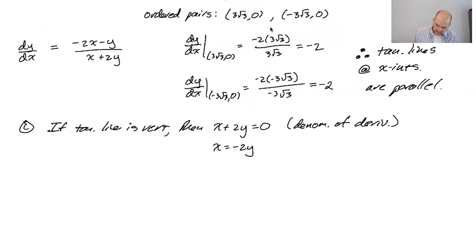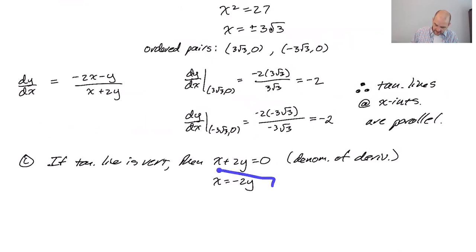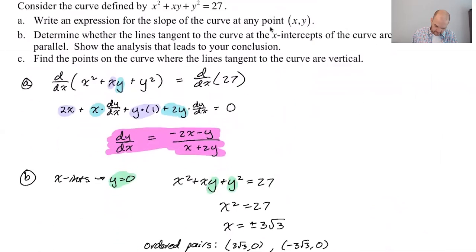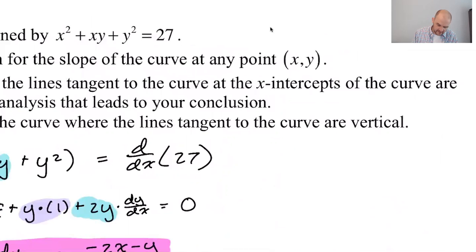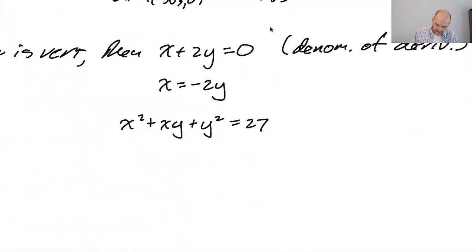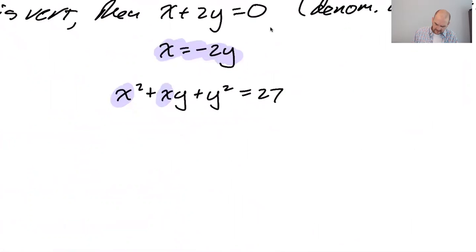I could have written denominator of dy/dx, but whatever. So that means that x is equal to negative 2y. All right, now that's a relationship from the derivative. I need another thing to plug into so I can actually solve something. I'm going to use x squared plus xy plus y squared equals 27. So x squared plus xy plus y squared equals 27. I'm going to take this with us.